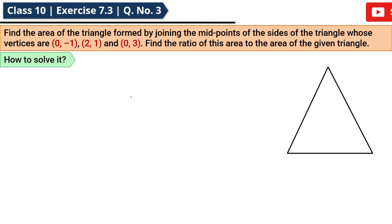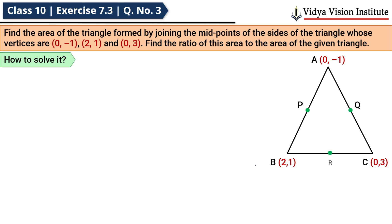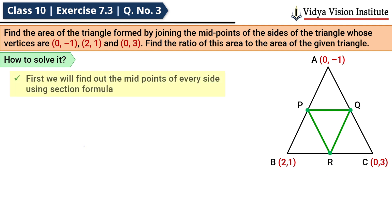Here we have one triangle whose vertices are given: (0, -1), (2, 1) and (0, 3). Now, the triangle formed by the midpoints of its sides — we call it triangle PQR — its area we need to find. Along with that, we need to find the ratio between the area of triangle ABC (the given triangle) and the area of triangle PQR.